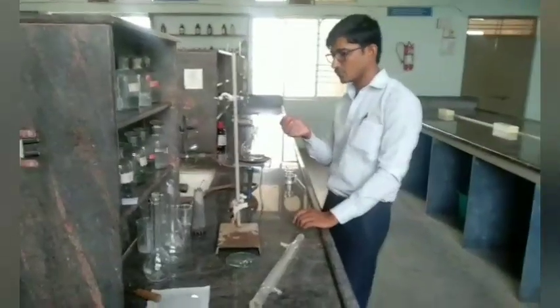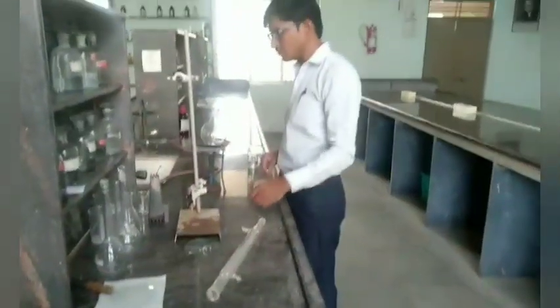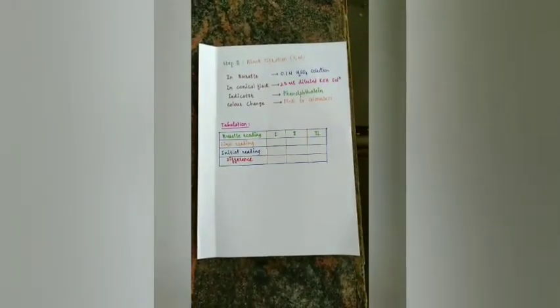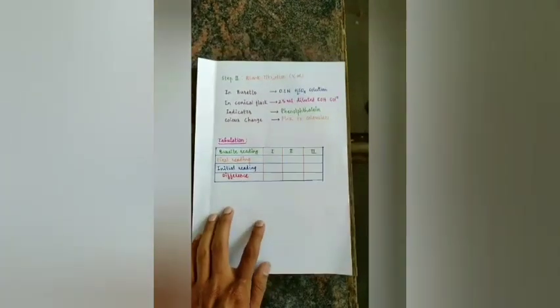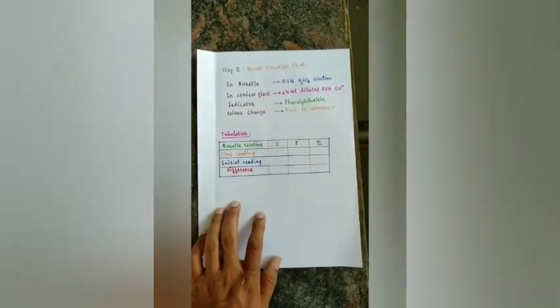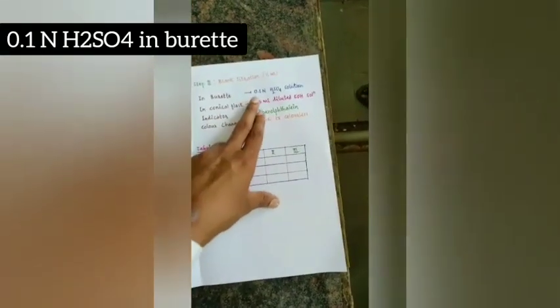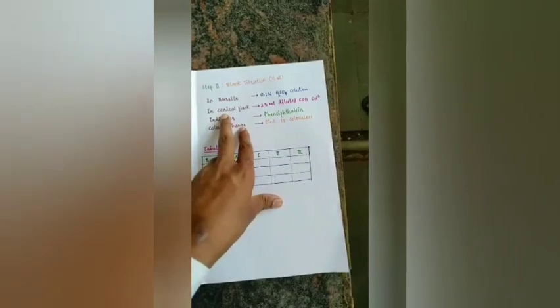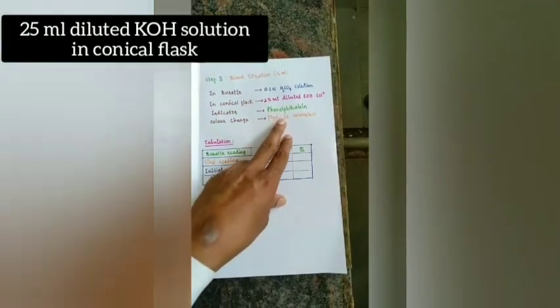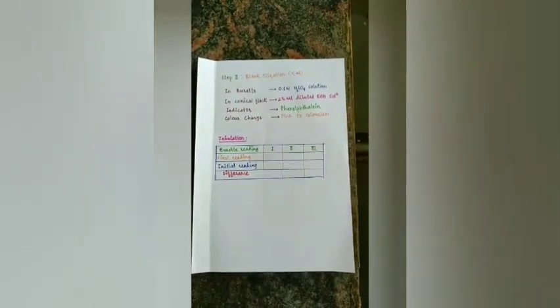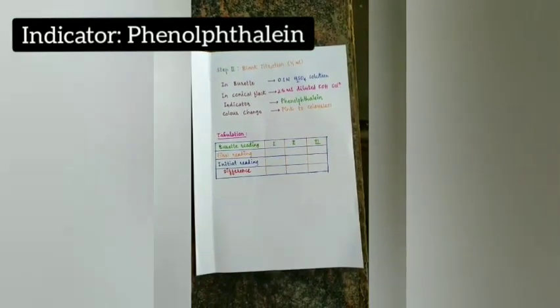There is no change in the color of the litmus paper, meaning that ammonia is completely expelled out from this reaction mixture. There are two steps for the estimation of acetamide: one is main titration and one is blank titration. For blank titration we have to take 0.1N H2SO4 in the burette, and in the conical flask 25 ml of diluted KOH solution. First, 1N KOH solution is taken in a measuring flask and diluted to 250 ml.